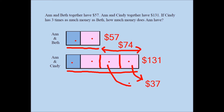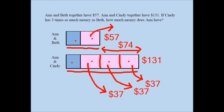So Beth's amount is $37, and Cindy's amount is three times that. Each unit bar is $37. Now, the blue piece plus the pink piece in the first bar add up to $57. Since Beth's amount is $37, Ann's amount must be $57 minus $37, which is $20. So Ann has $20. Adding $20 to $37 times 3 gives $131, which checks out.